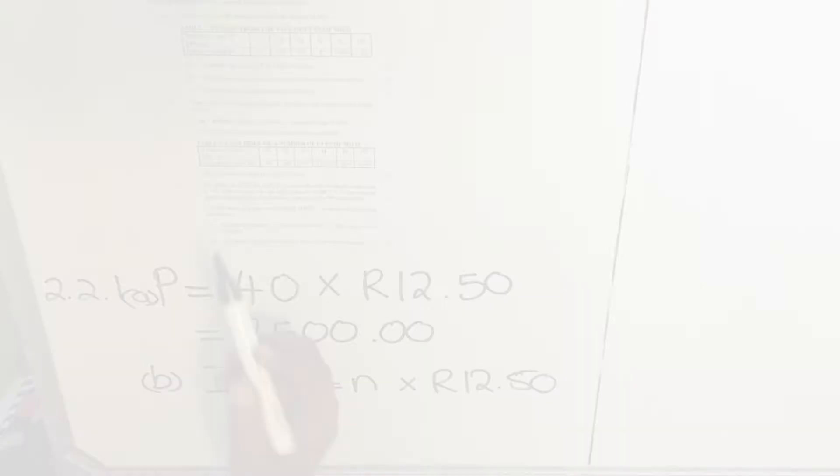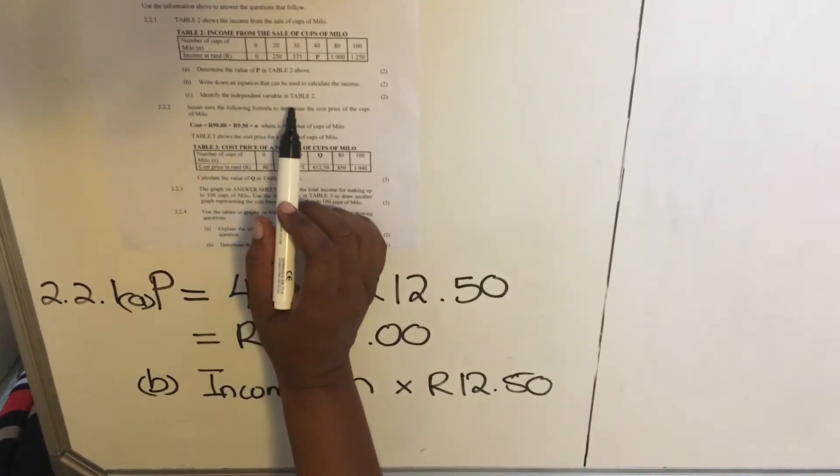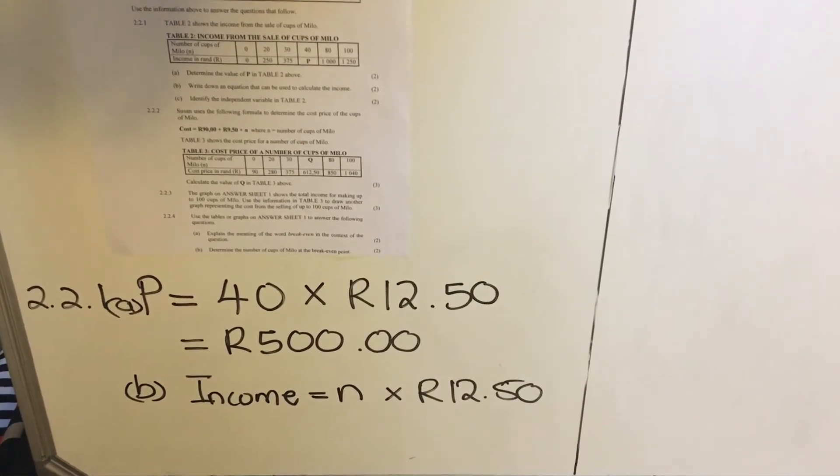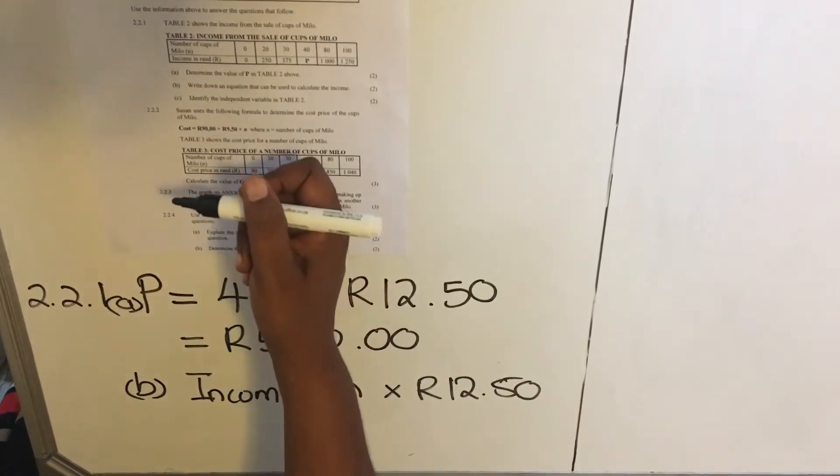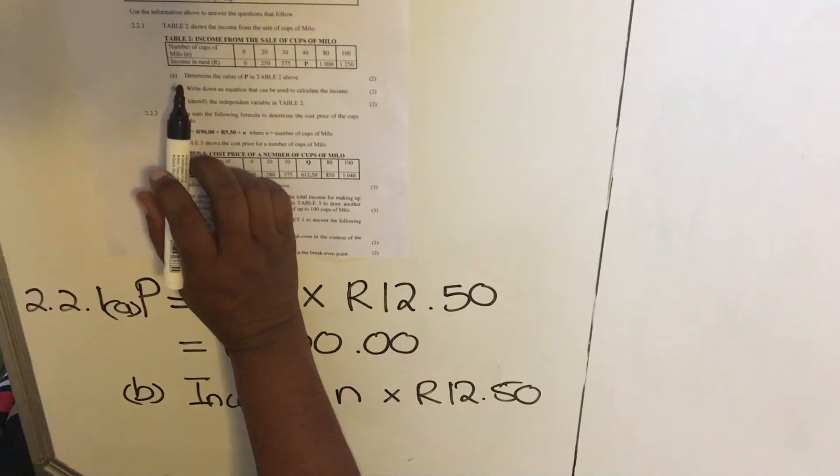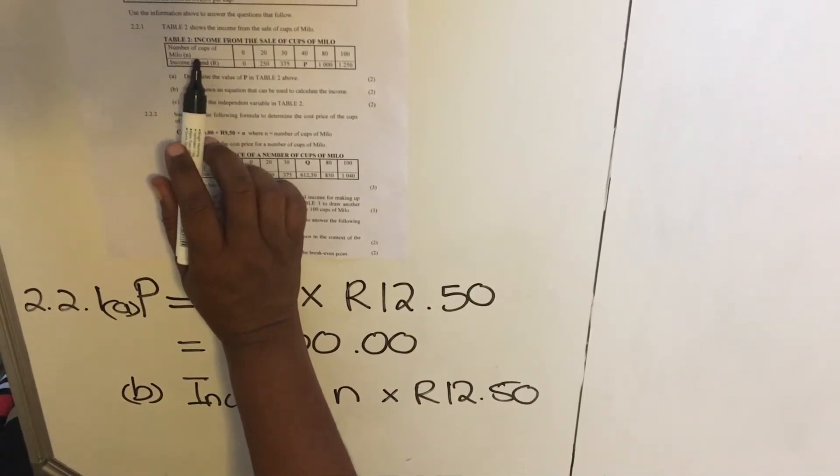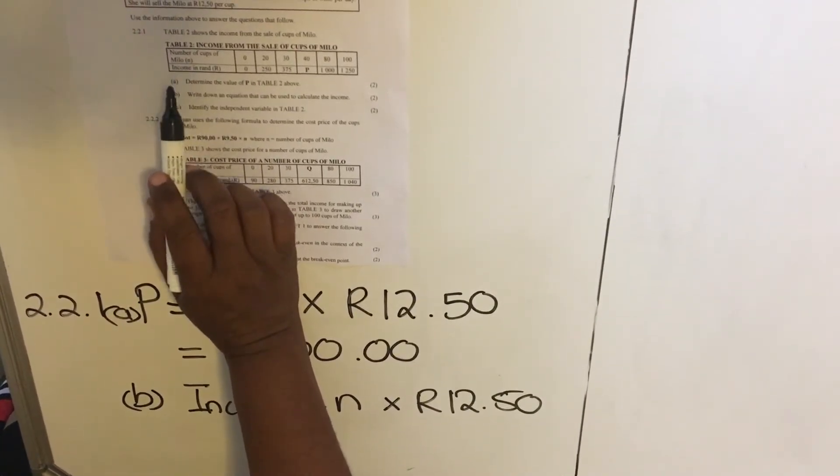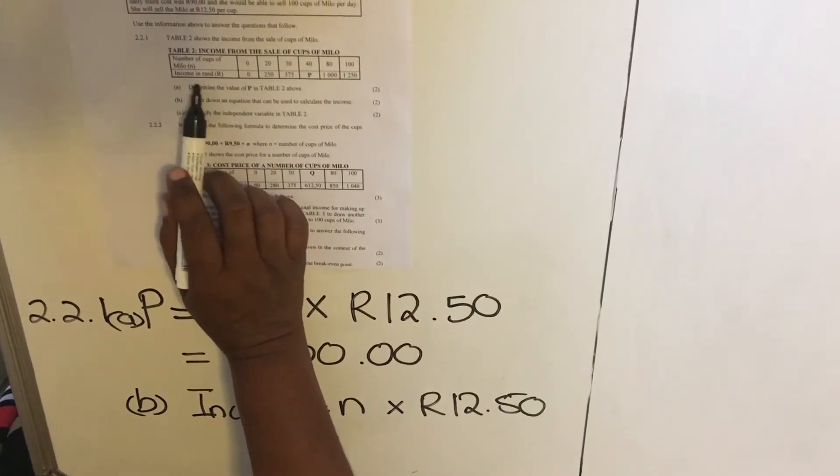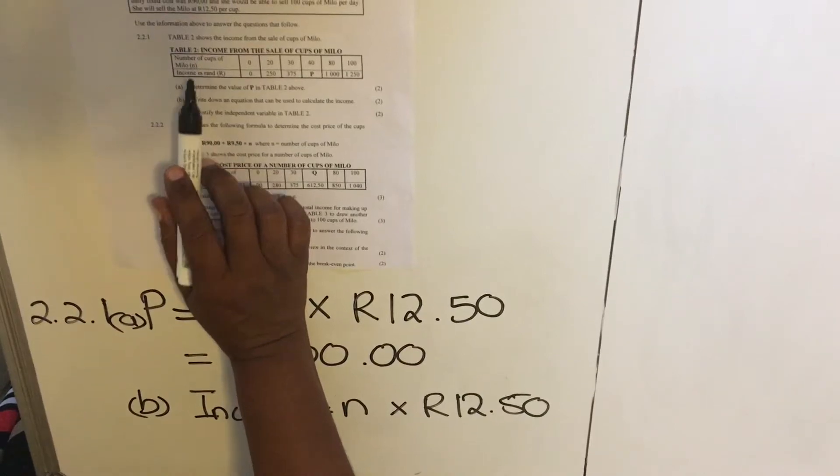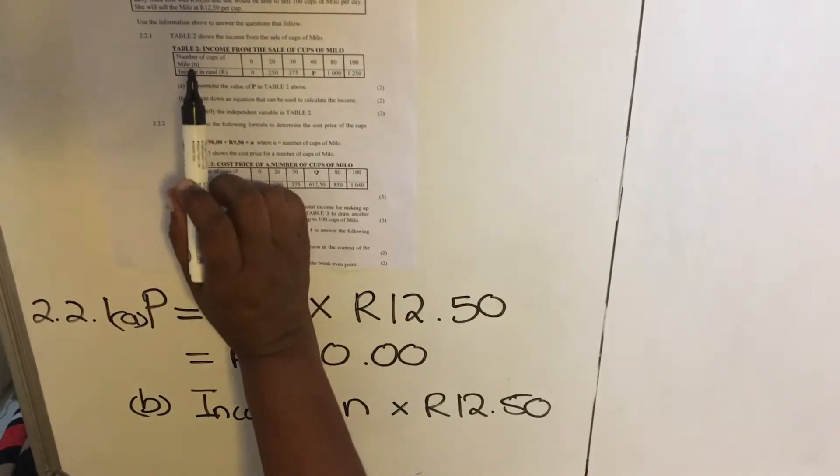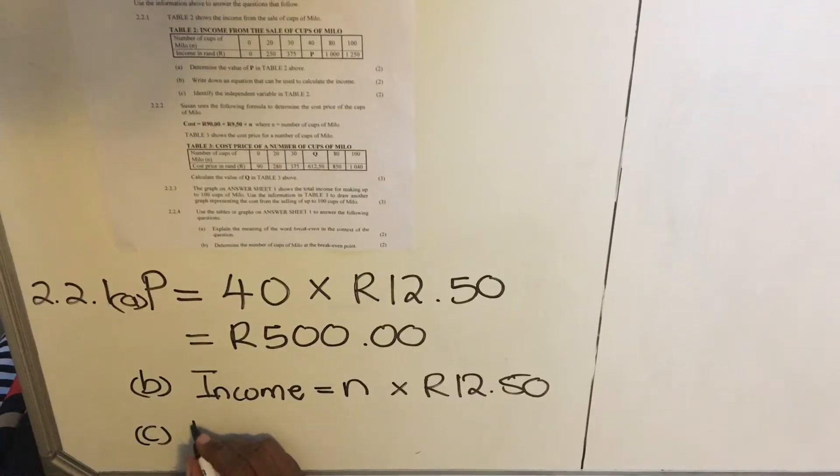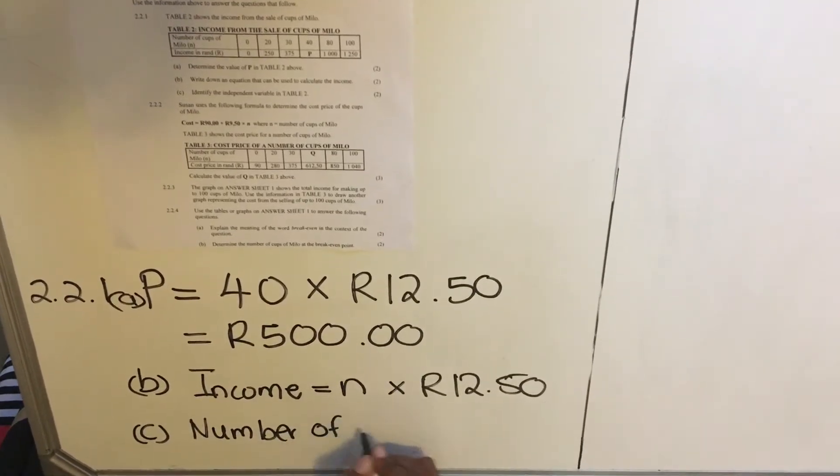Let's look at number C. Number C, identify the independent variable in this table. The independent variable is that variable that we put in the formula and then we get the answer or the dependent variable. In this question, the number of cups will determine how much income you have. So the independent variable is the number of cups of Milo that you sold. And the dependent variable is the income because the income depends on how many cups did you sell. So normally on a table, they will write the independent variable on top and the dependent variable underneath. So our answer for C is number of cups of Milo.